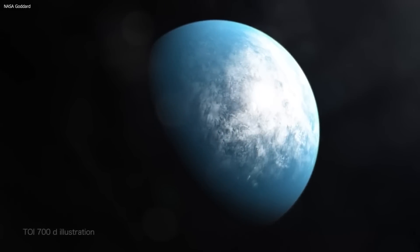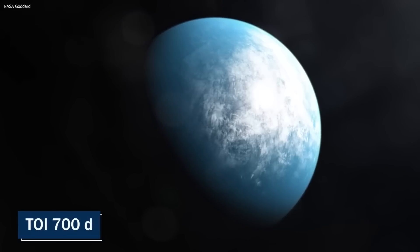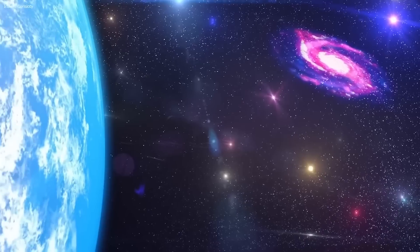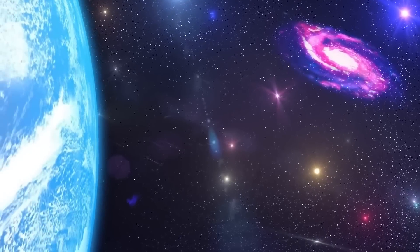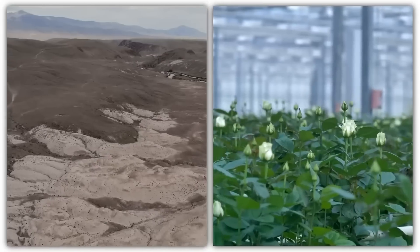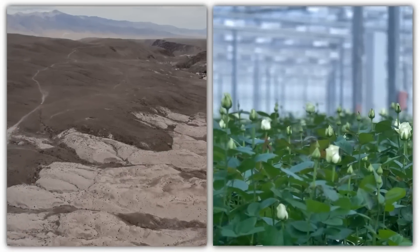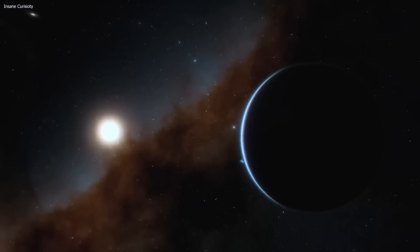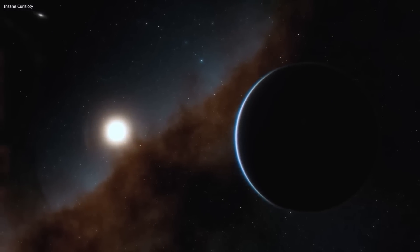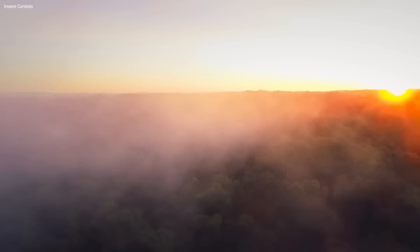In 2020, scientists announced the discovery of a new exoplanet called TOI 700D. This planet is located in the habitable zone of its star, which means that it could have liquid water and support life. This discovery has generated a lot of excitement in the scientific community, and it highlights the potential for finding habitable worlds beyond our own solar system.